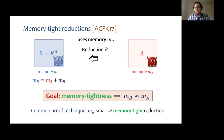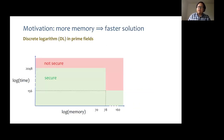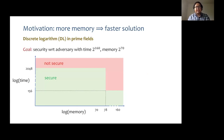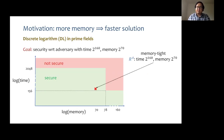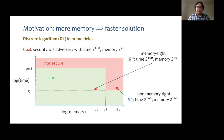In all known examples, a memory tight reduction is given by a reduction whose memory complexity is small and independent of the memory of A — that is the only technique we know for proving memory tightness. The following graph shows for which memory and time complexity the best known algorithms succeed in breaking the discrete logarithm problem in a 4096-bit prime field. Suppose we want security against adversaries using time 2^160 and memory 2^70. If we have a memory tight reduction to the discrete logarithm problem, then we can infer that the scheme is secure. However, if the reduction is not memory tight, we do not necessarily get any guarantees.